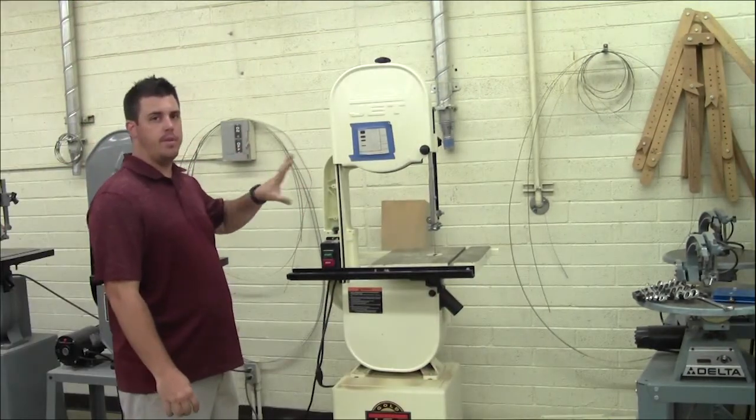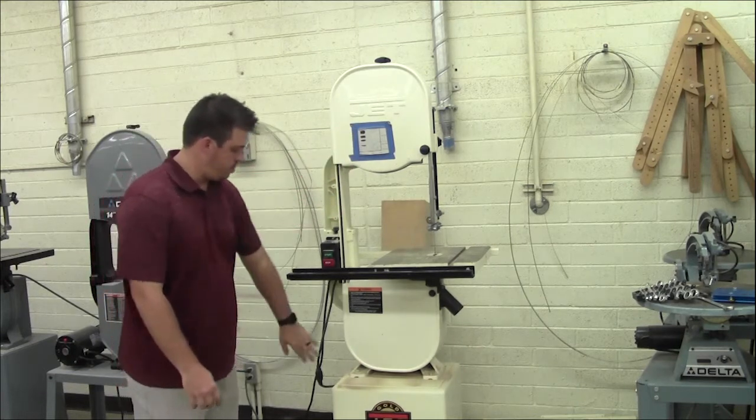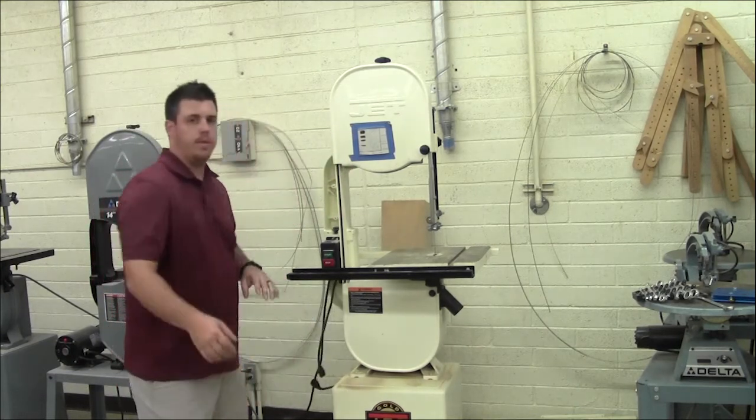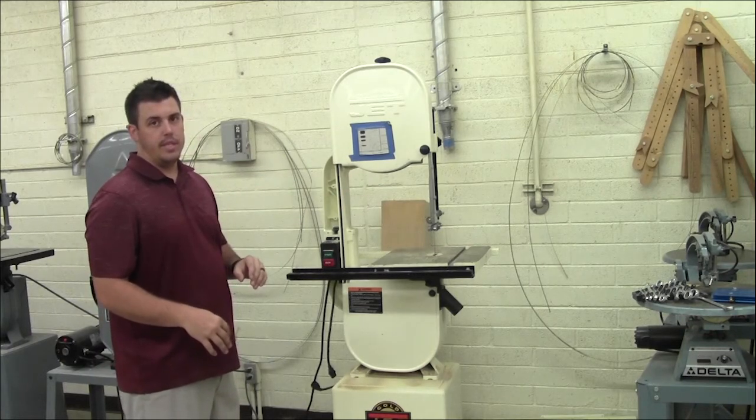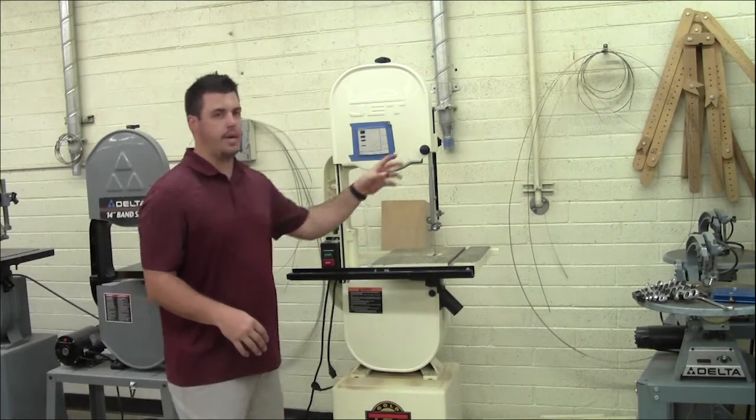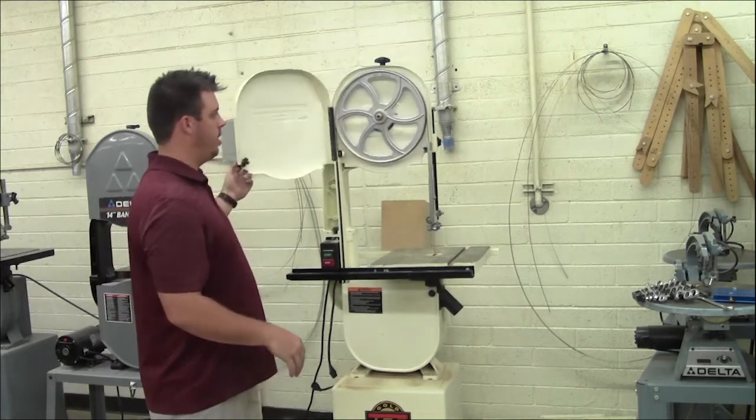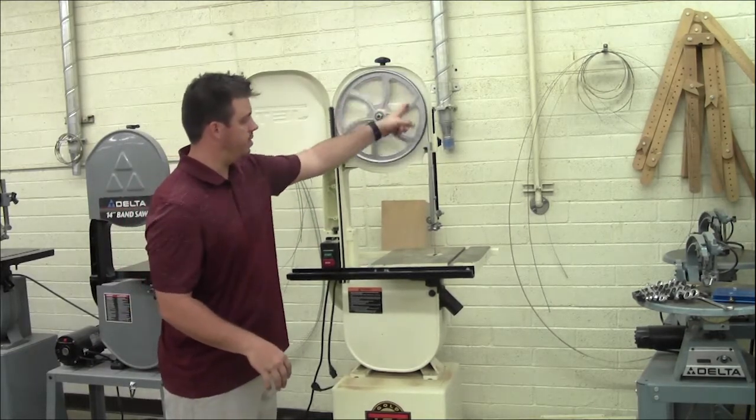Before you do anything, before you open it, you always want to make sure it's unplugged. So now I can open it up and I know nothing will turn around and it won't be any dangerous for me. A band saw is just a large steel band saw blade that goes around two wheels.